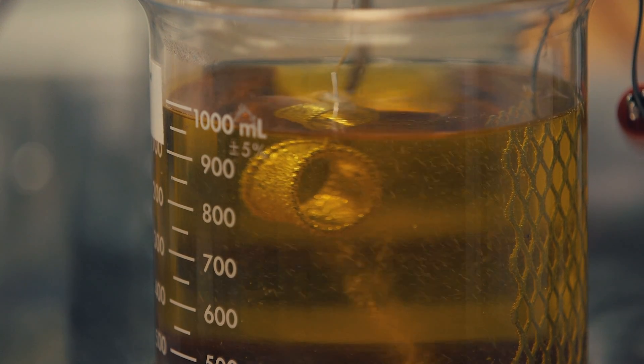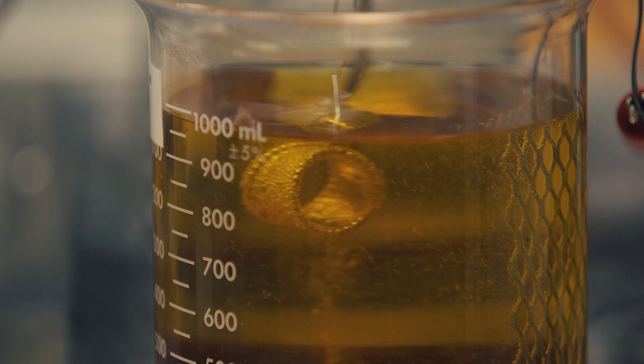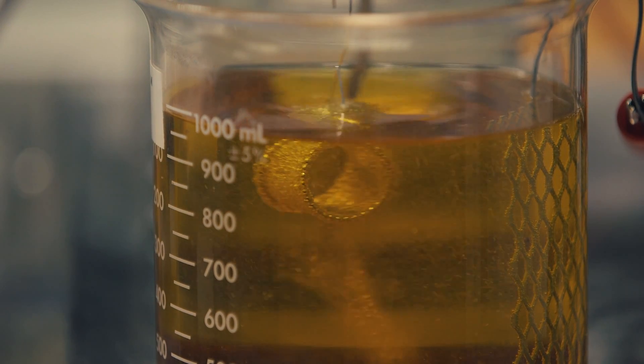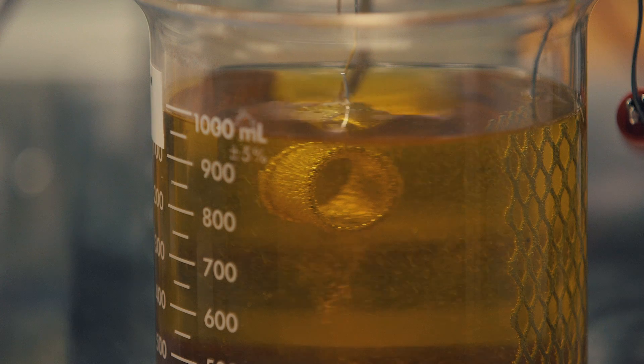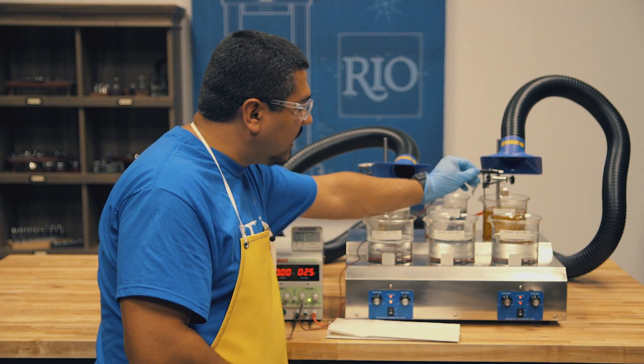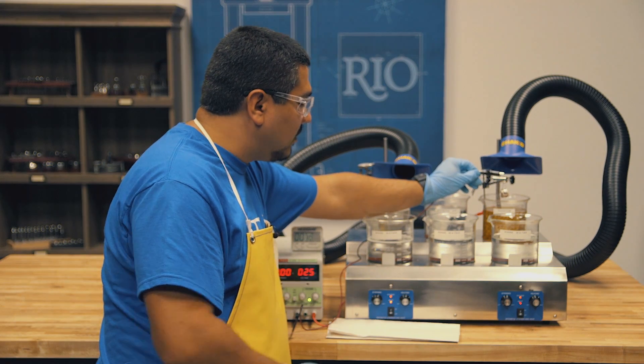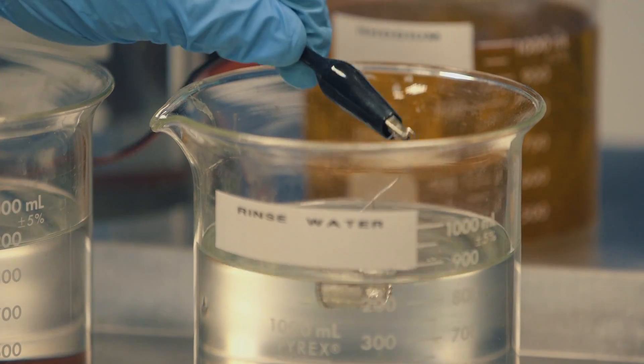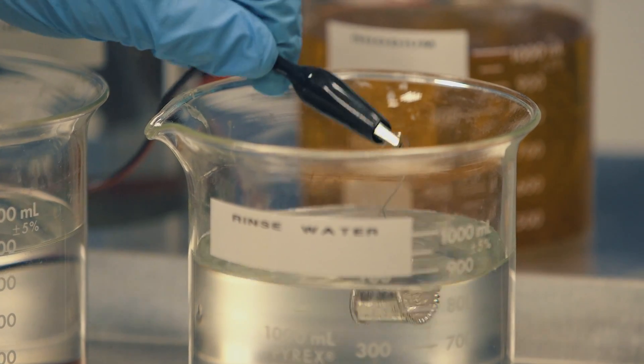You'll see hydrogen bubbles form on the surface of the piece. That is indicating that we are getting a deposition of rhodium on the surface. After 30 seconds, we'll distilled water rinse. This is rinsing off any excess plating solution.